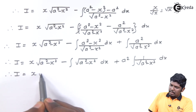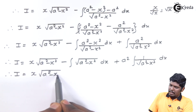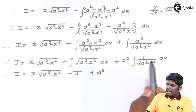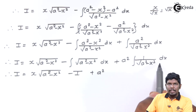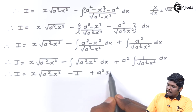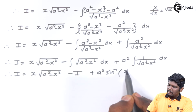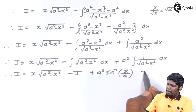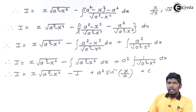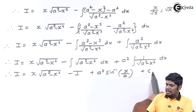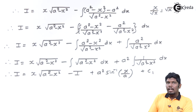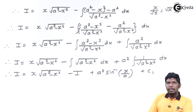Therefore, i = x√(a² - x²) − i + a² × sin⁻¹(x/a). This result for the integral of 1/√(a² - x²) = sin⁻¹(x/a) was proved in previous videos. We add constant c1 here, because after solving for i by dividing by 2, c1/2 will become c.